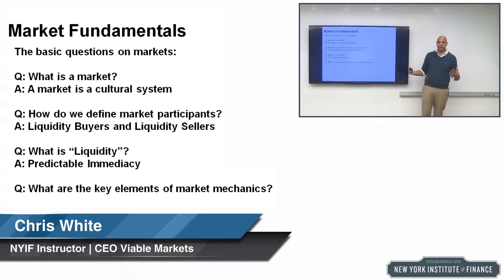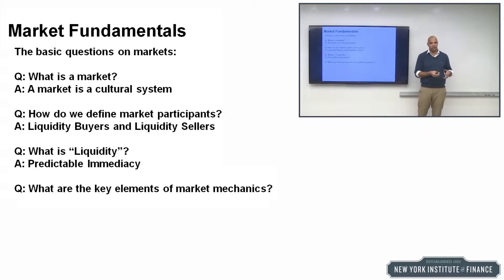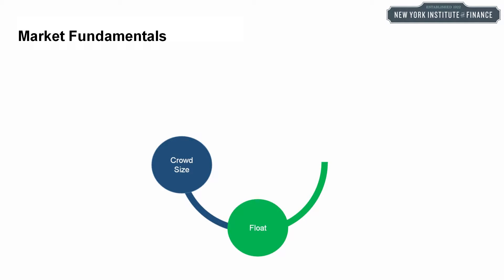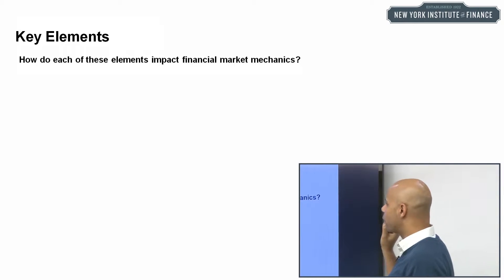This next piece has to go in with the science, and it really isn't discussed when you're talking about markets. But if you break down markets into elemental categories, it gets much easier to understand how different markets behave. There are four key elements of market mechanics: crowd size, float, natural demand, and standardization. These four things are incredibly powerful — let's look at them individually.